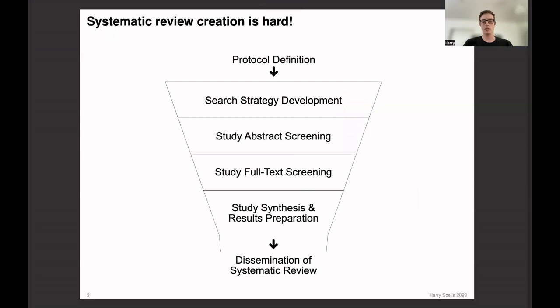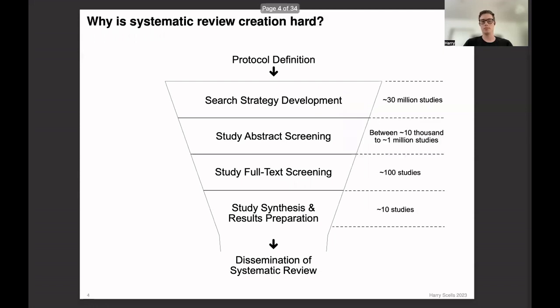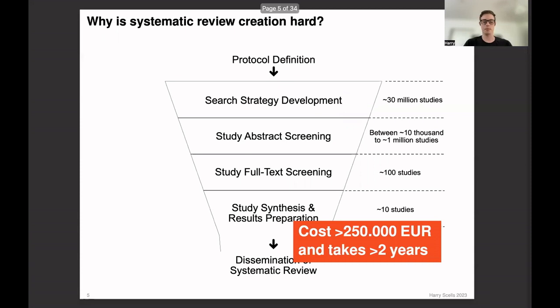But creating systematic reviews is really difficult because there are lots of steps involved in the creation of a systematic review. And these steps form a funnel. The set of documents initially retrieved by a complex Boolean query are continuously refined, starting from about 30 million documents and ending up at around 10. And this refinement process can be very time-consuming and expensive.